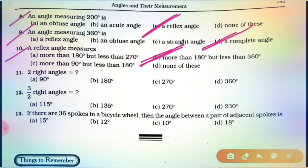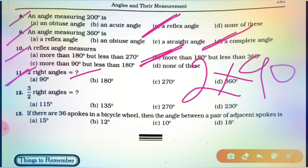Now, proceed to the 11th question. Two right angles — two right angles means 2 into 90 degrees. One right angle is equal to 90 degrees, so two right angles equal 180 degrees. Option number B is correct.